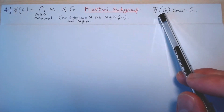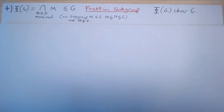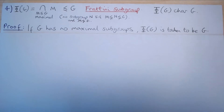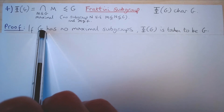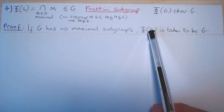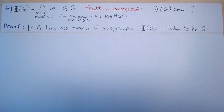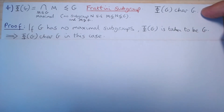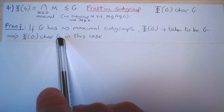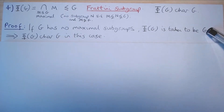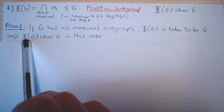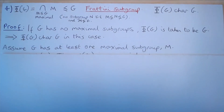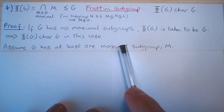We will now show that the Frattini subgroup of G is characteristic in G. First, note that if G has no maximal subgroups — for instance, if G is the infinite cyclic group — then the Frattini subgroup of G is taken to be G itself. Since G is always characteristic in G, any automorphism of G fixes G, so the Frattini subgroup is characteristic in G in this case. So now assume that G has at least one maximal subgroup M.